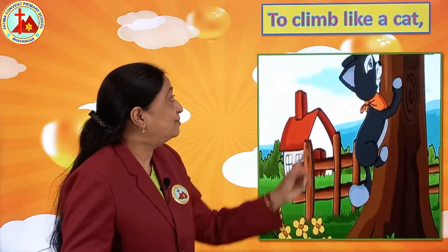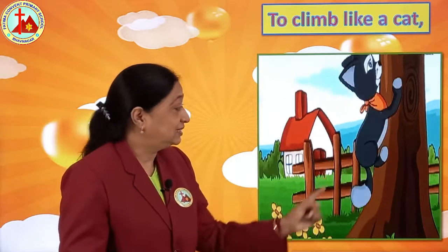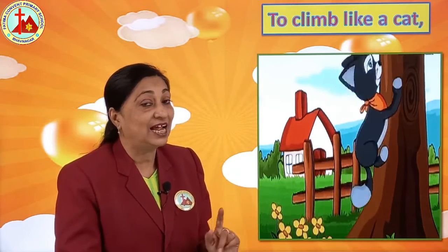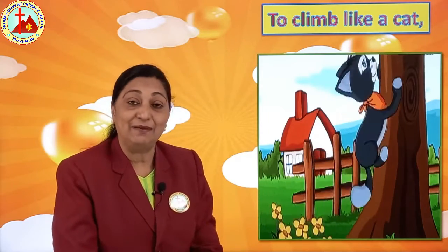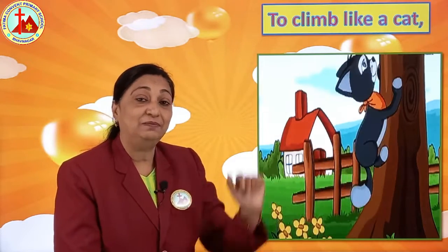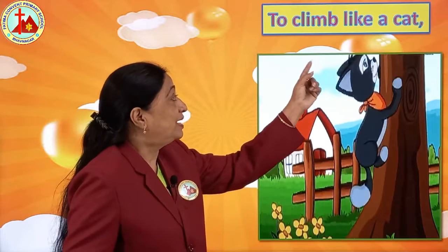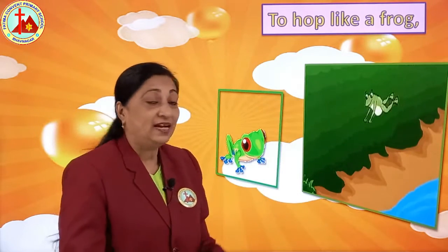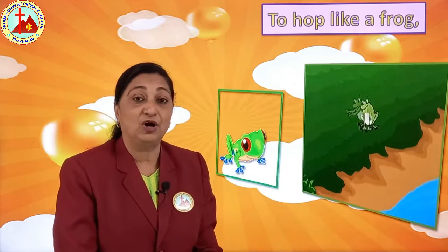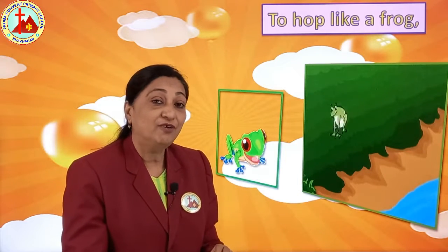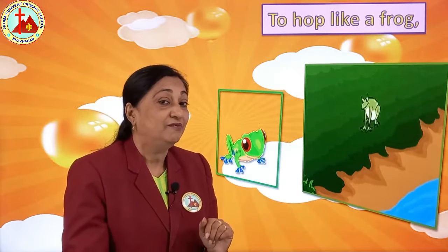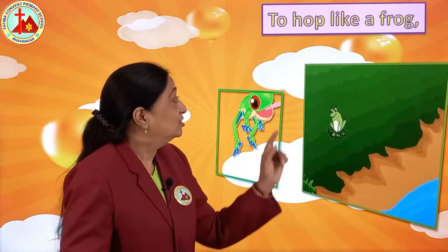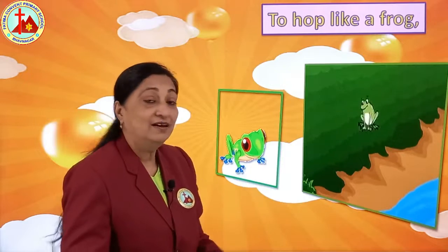Then which other animal? To climb like a cat. See how this cat is climbing. In the same way the child says it is fun to climb like the cat — the cat climbs the tree — so to climb like a cat. To hop like a frog. See how the frog is hopping. Sometimes in the rhyme we do the action of hopping. So it's fun to hop like the frog.